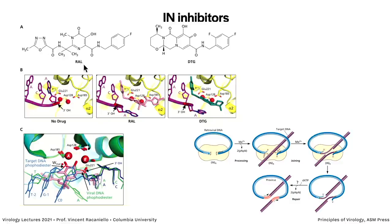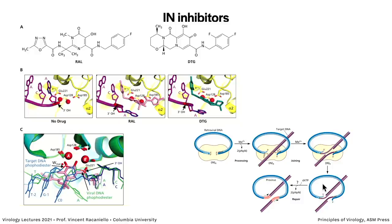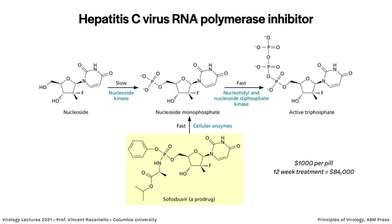Moving further in the infectious cycle: integrase inhibitors. Raltegravir and dolutegravir target the integrase reaction, where retroviral DNA sits on integrase, the target DNA is nicked, and ligation and repair occur. These drugs sit in the active site — raltegravir and dolutegravir bind and deform it so the nicking and ligation reaction can't occur. They're among the more recently developed inhibitors and are very effective, but can't be used alone due to resistance.